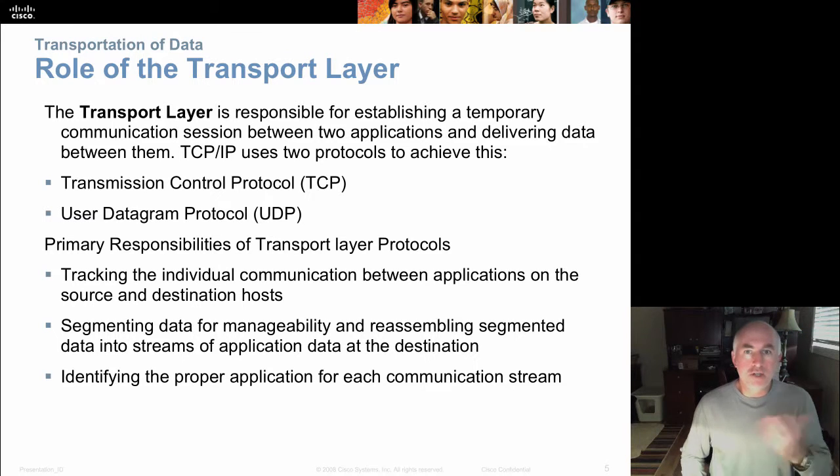If you're using TCP, it would also provide sequence numbers so that the pieces or segments of the communication could be reassembled in the correct order and could be resent if missing pieces were discovered. The transport layer is responsible for establishing a temporary communication session between two applications. Layer 3, the network layer, connects two devices, computer to computer. Layer 4 is connecting applications on those devices, so your web browser to the web server.